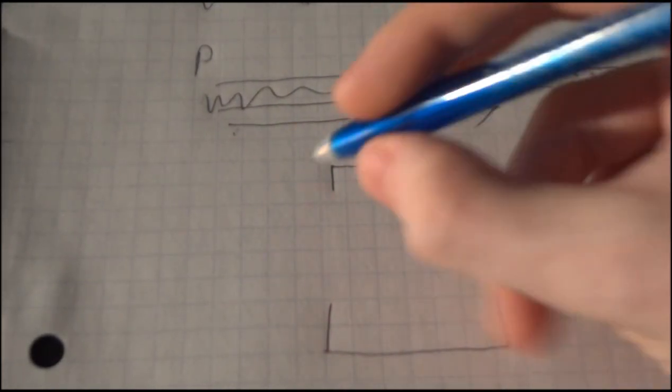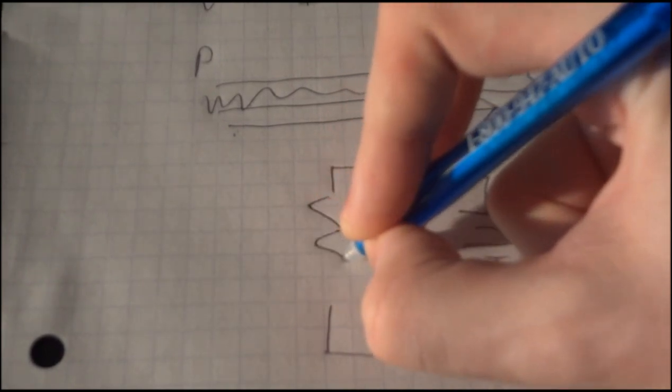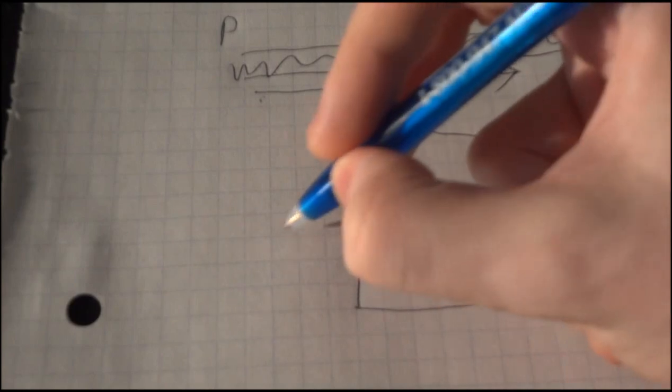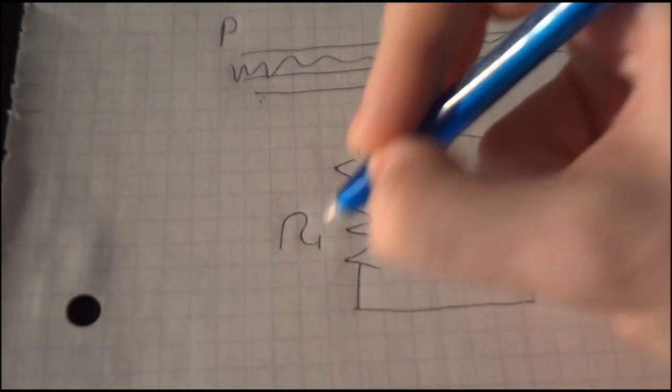And then the third part is our resistance. And in this case we have something called a resistor and we just label it R1.